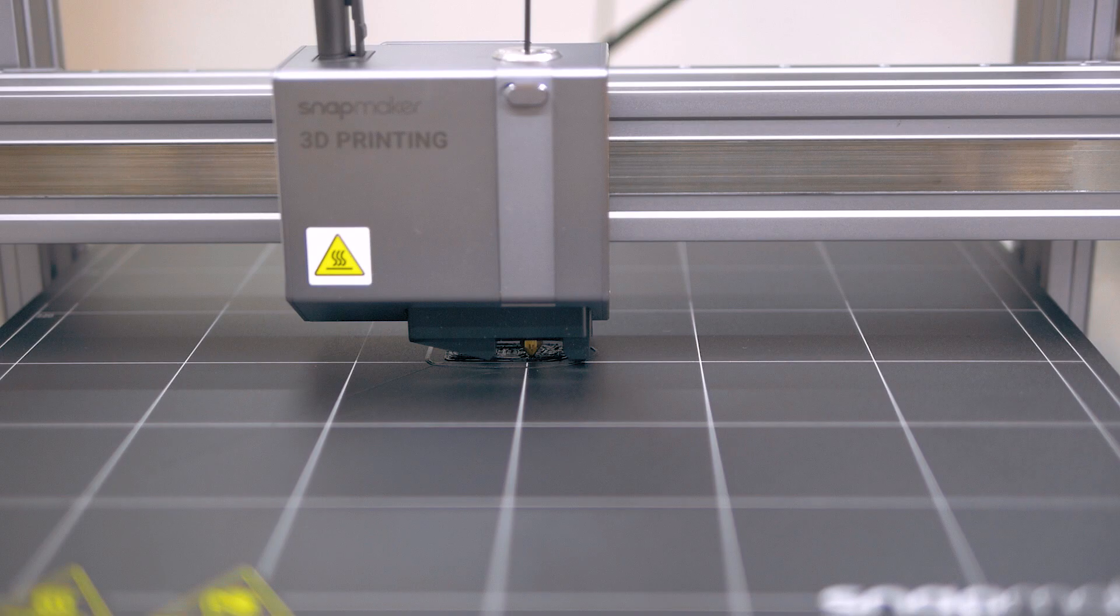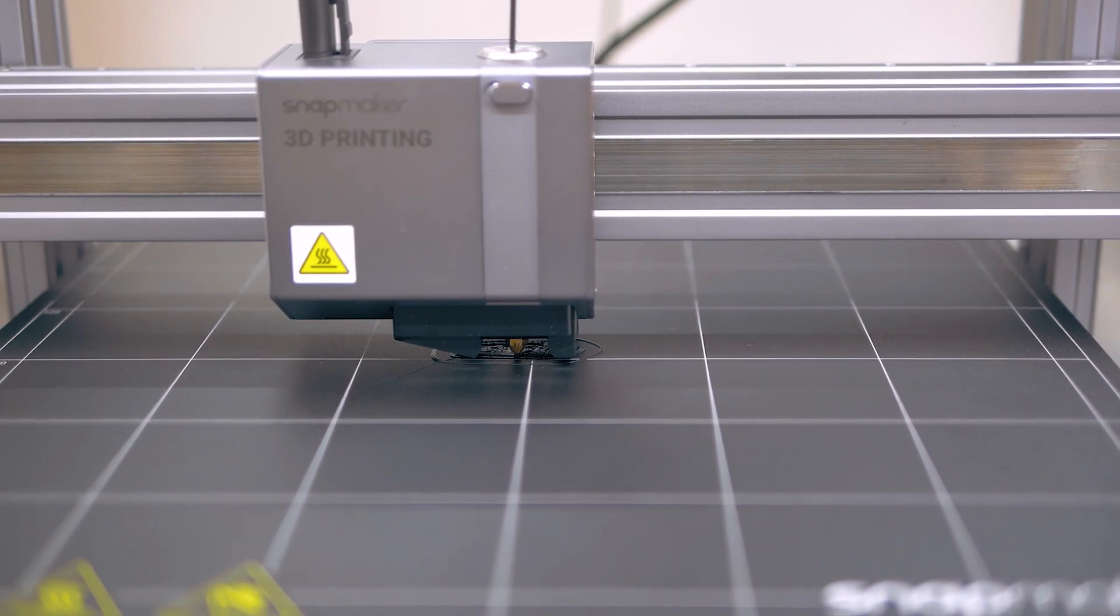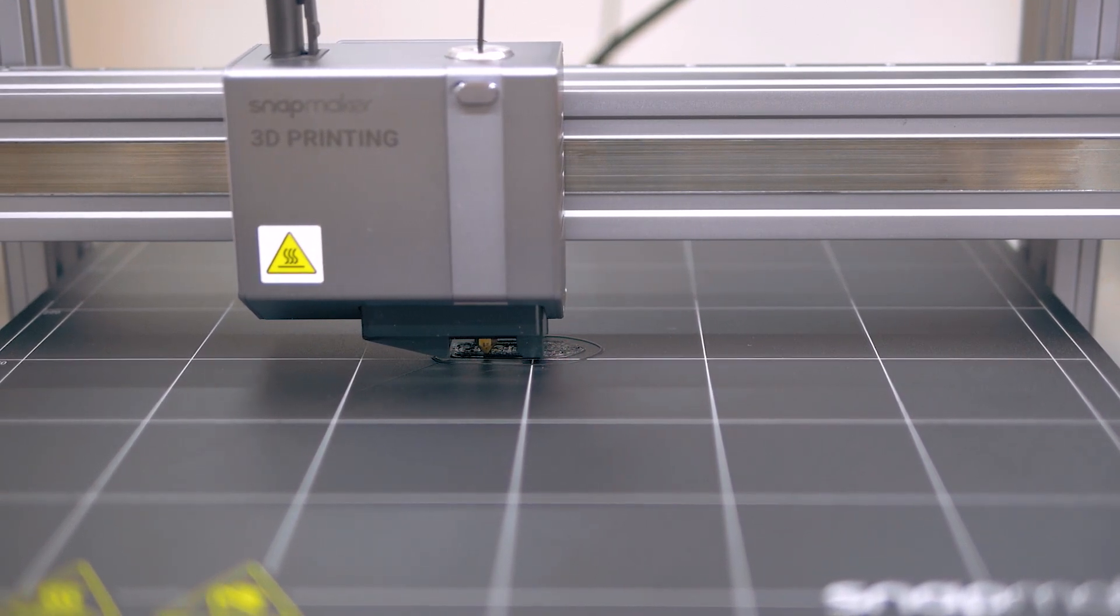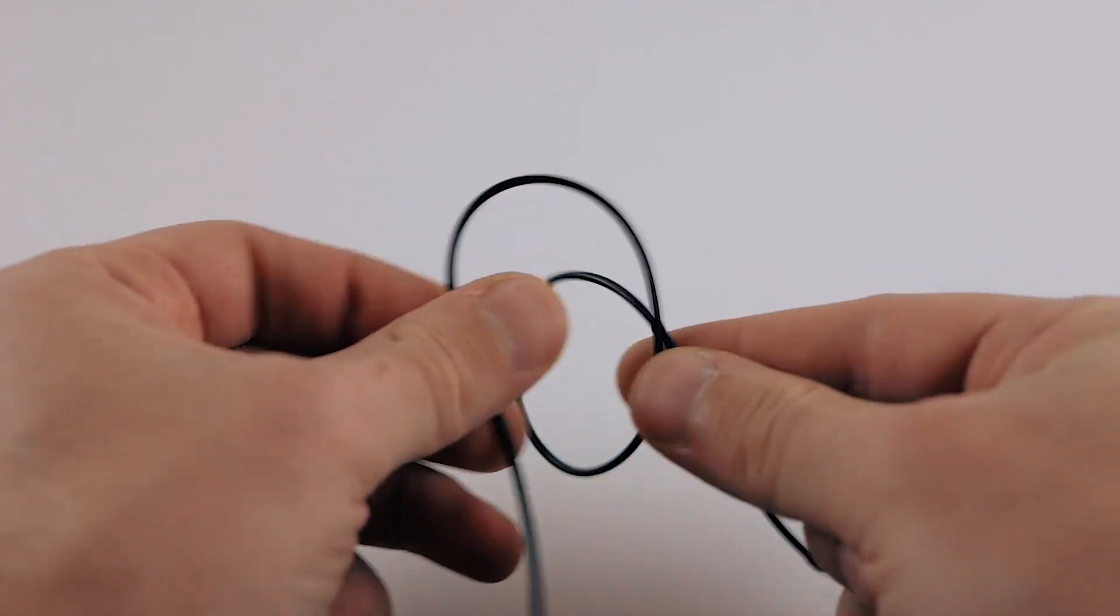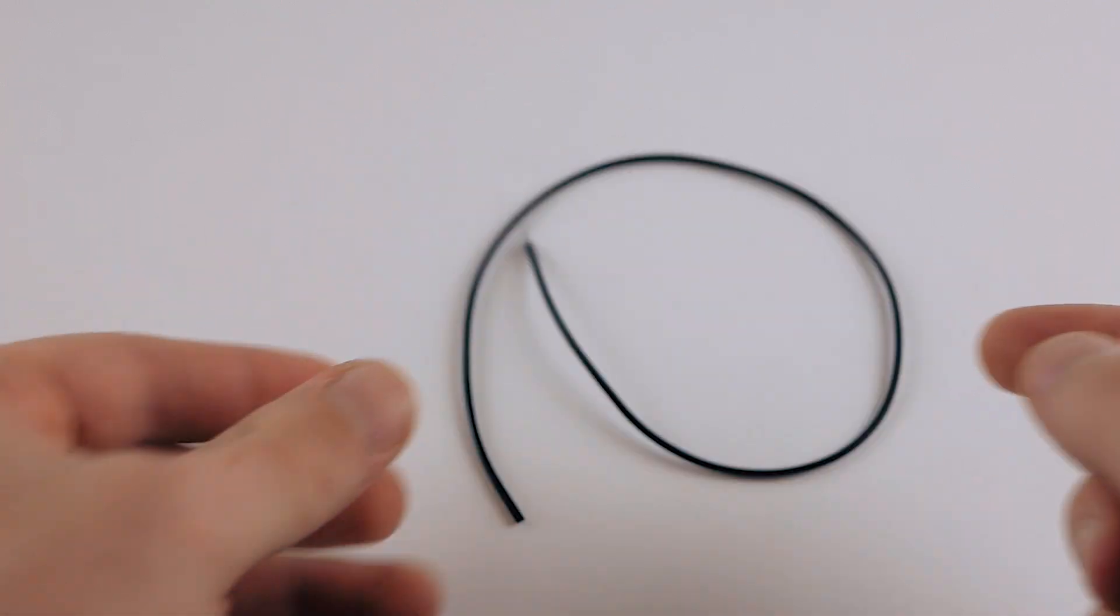First time, all of my TPU printing was failing and I even started thinking that there was something wrong with my printer. But soon I realized that the problem was in TPU filament, not the printer, because it is super flexible.